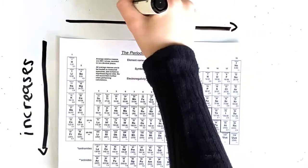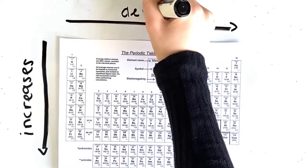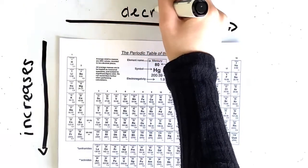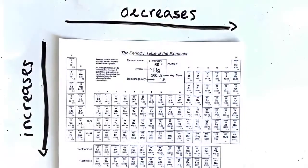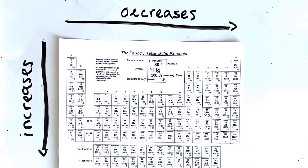As you go across a period, the atomic radius decreases. This is because the number of electrons increase but are added to the same shell. In addition, the number of protons increases, which increases the ENC. The higher the ENC, the more pull the valence electrons feel from the nucleus, meaning the distance between the nucleus and the valence shell is smaller, therefore giving the atom a smaller radius.